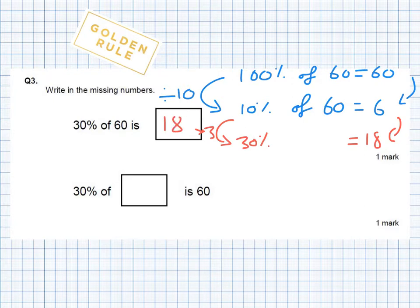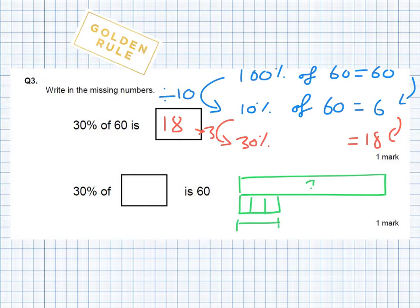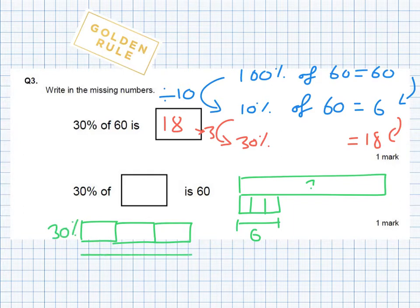Now the second question, our second part is a little bit trickier. This one says 30% of something is 60. So here's my something. I don't know what it is. I know 30% of it. That would be three 10%s is 60. So these three blocks, that 30% is worth 60. Let's put it another way. Here's one block, that's 10%. That's 10%. And that is 10%. That is 30% of my number. And I know 30% of that number is 60.